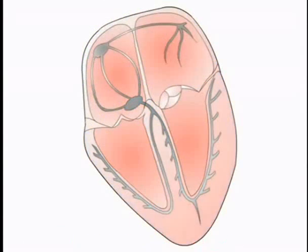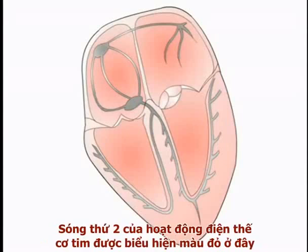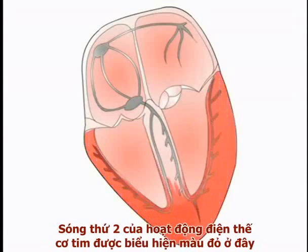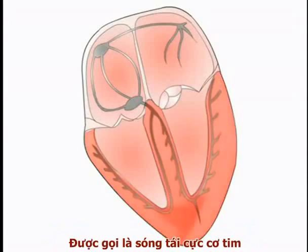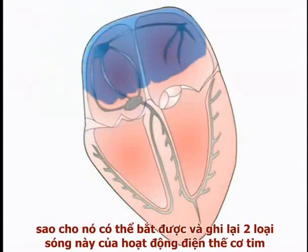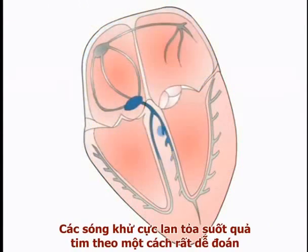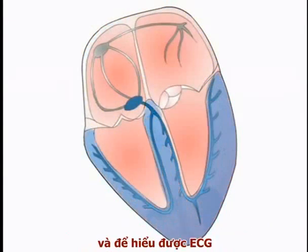Following systole, cardiac muscle returns to a resting state, and this is associated with reversal of the movement of charge across the myocyte membranes. This second wave of electrical activity, seen here in red, is termed cardiac repolarization. The leads of the ECG machine are designed to detect and record these two waves of cardiac electrical activity.